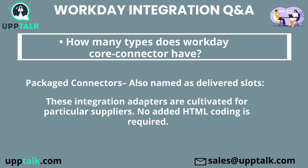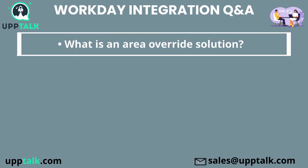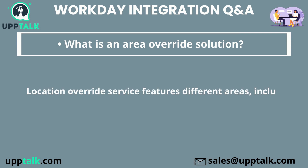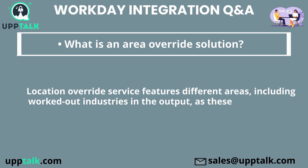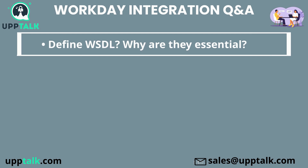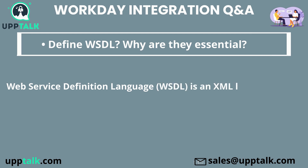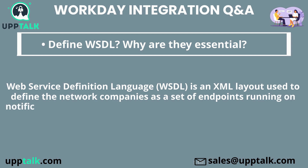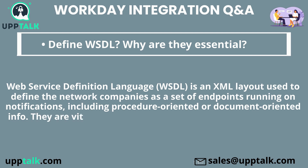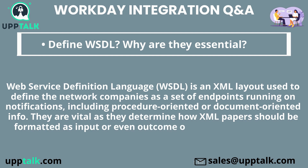Core Connectors. What is an Area Override Solution? Location Override Service features different areas, including worked-out industries in the output, as these fields are not available under any remedy. Define WSDL and why are they essential? Web Service Definition Language, WSDL, is an XML layout used to define the network companies as a set of endpoints running on notifications, including procedure-oriented or document-oriented info. They are vital as they determine how XML papers should be formatted as input or output of Workday web services.